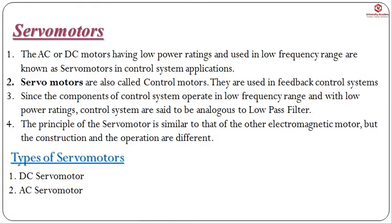Now, let us see what is a servo motor. The AC or DC motor having low power ratings and used in the low frequency range are known as the servo motor in control system applications. The AC and DC motors having low power rating operate at low frequency range. Such type of motors are known as servo motors and they are also known as control motors, used in feedback control systems.